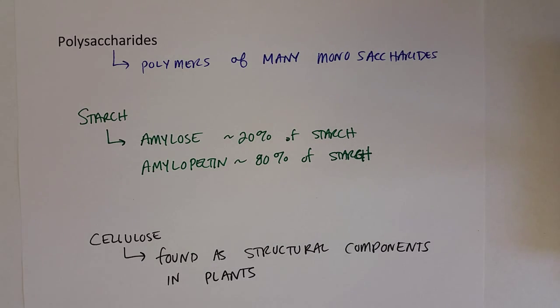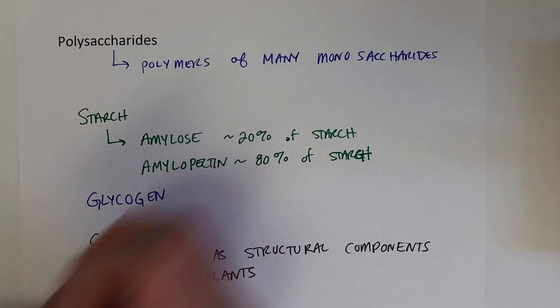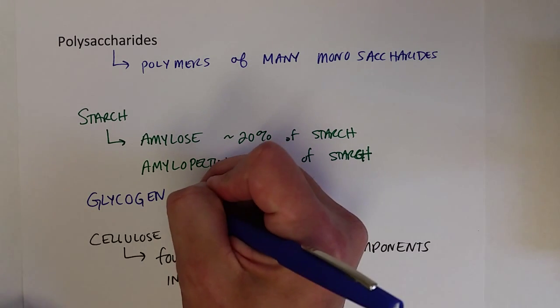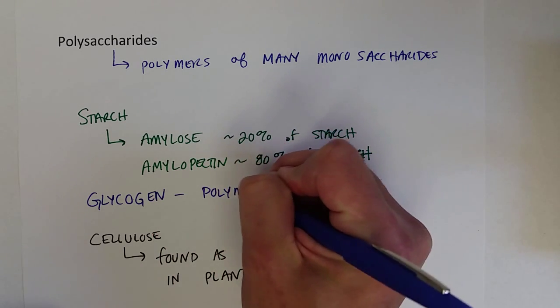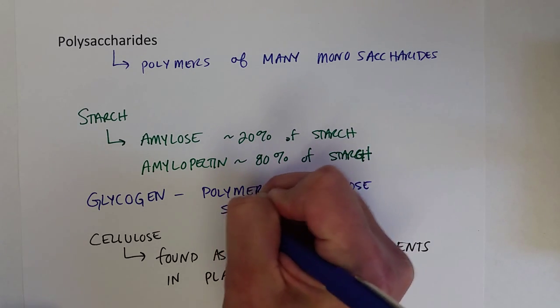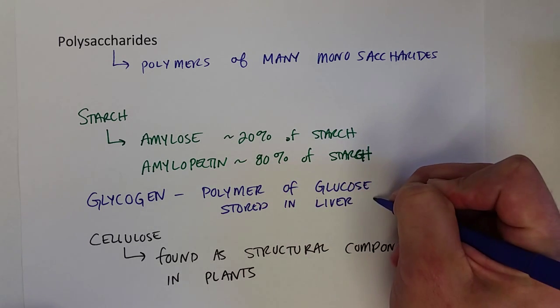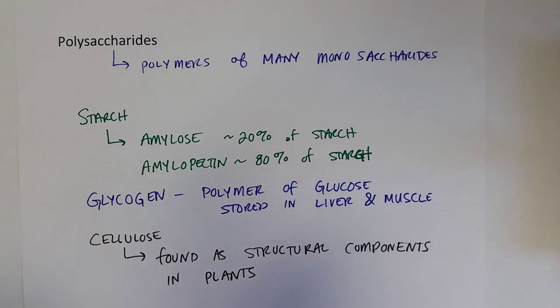Another important polysaccharide is glycogen, sometimes referred to as animal starch. Glycogen is stored in the liver and muscles of animals, including us. It is primarily just a polymer of glucose stored in animals.